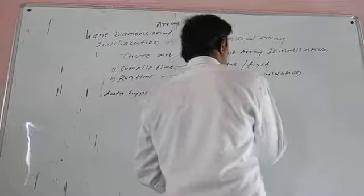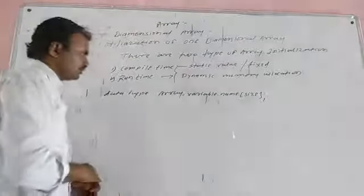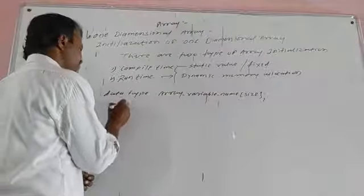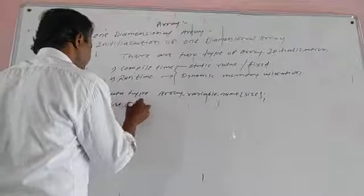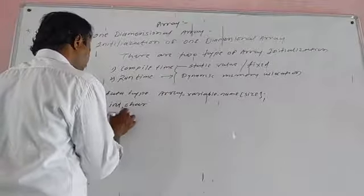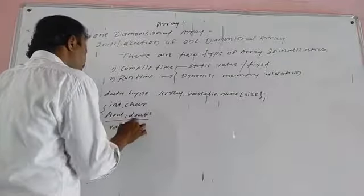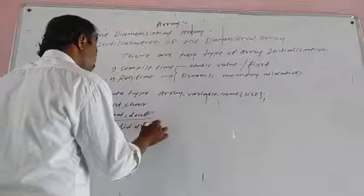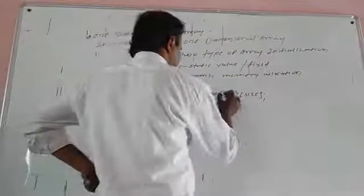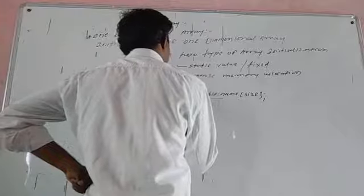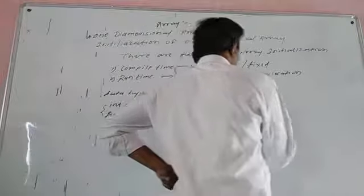We look at the array name and its size. We have initialization and we have to declare it. The data types include integer, character, float, and double. We have a valid data type, a user-selected array variable name, and a size — maximum 3D.